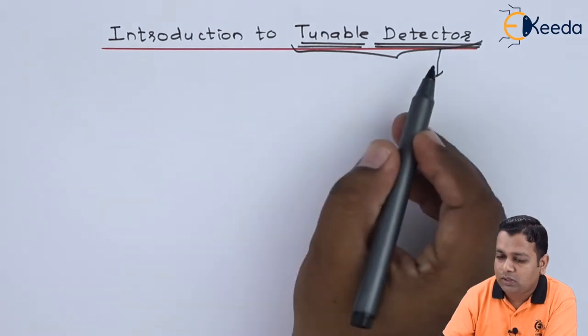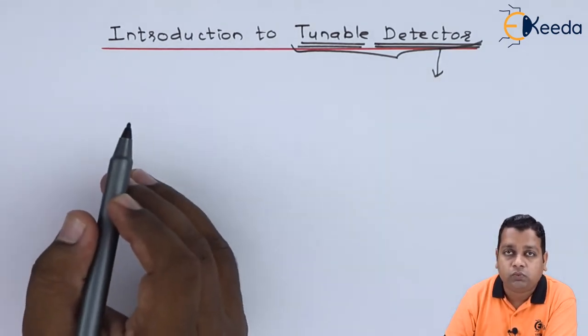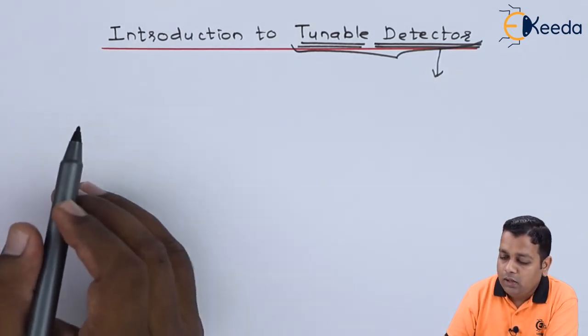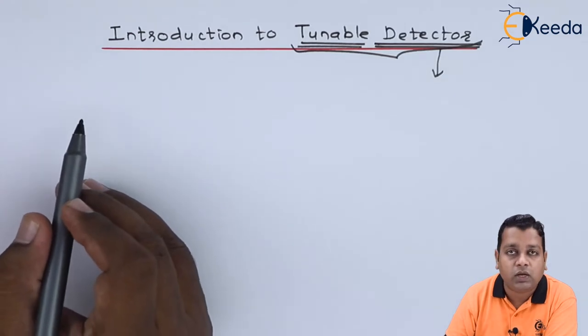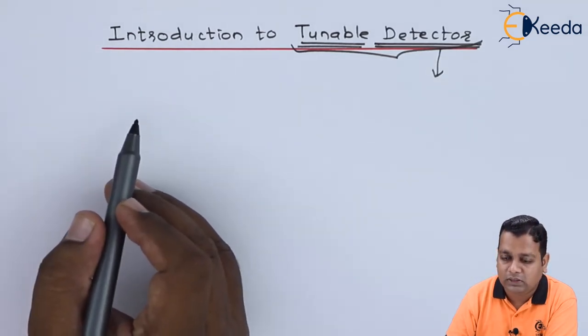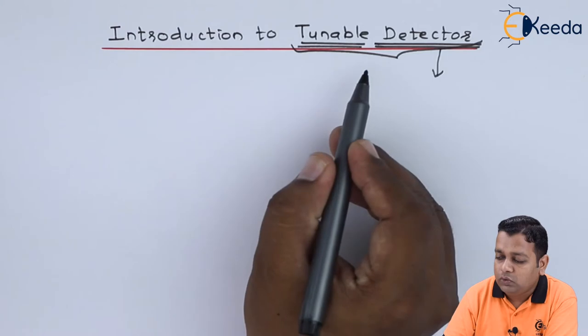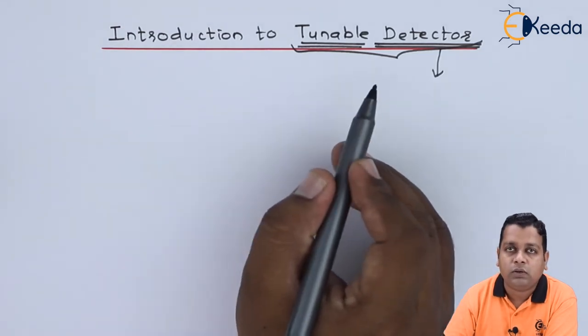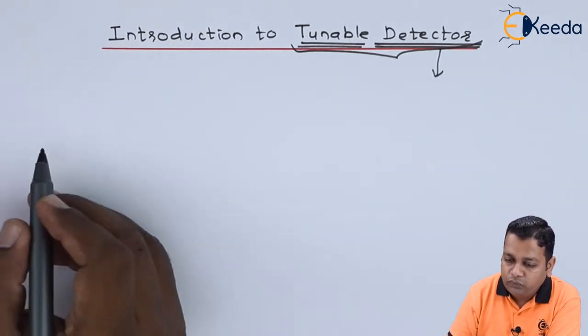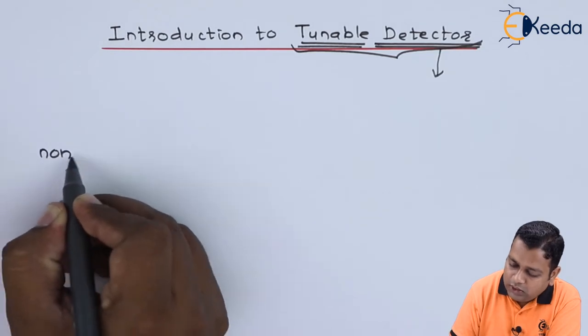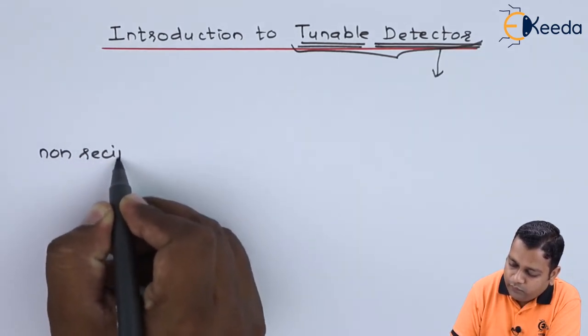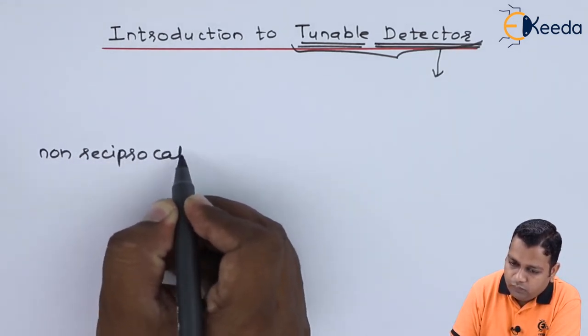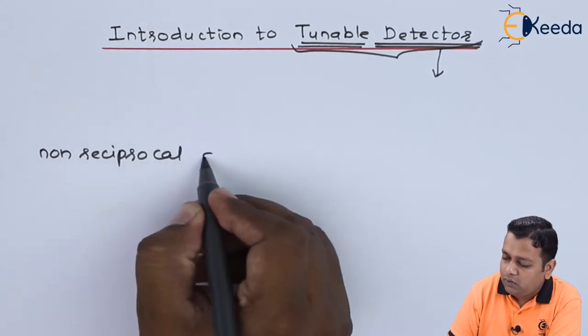It is used for the detection of low frequency square wave modulated microwave signal. The use in the tunable detector is we have non-reciprocal detector diode.